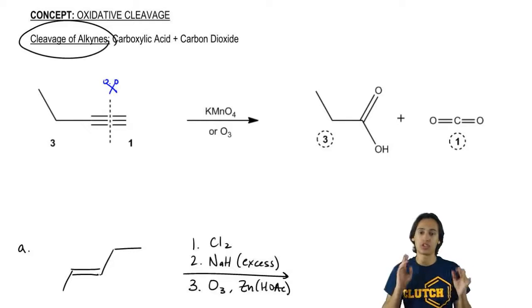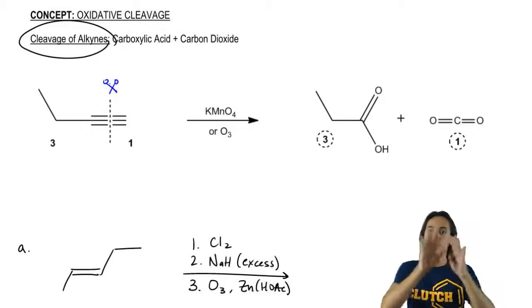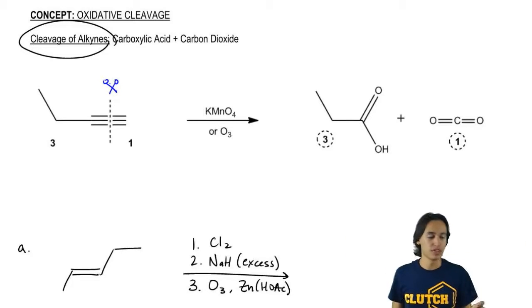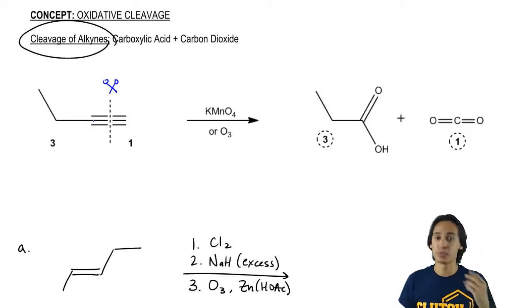The way that we tell what the two products are going to look like, because it's going to split one thing into two, is that we look at how many carbons are on each side. In this case, for this specific triple bond, I would have three carbons on one side, one carbon on the other.